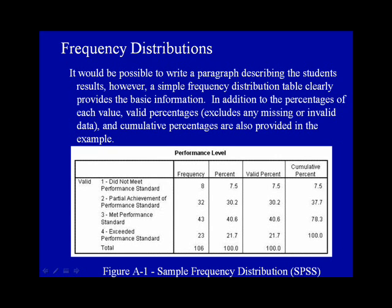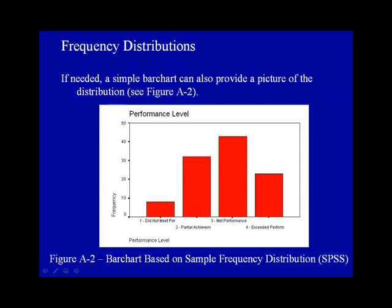It would be possible to write a paragraph describing the student's results. However, a simple frequency distribution table, as shown in figure A1, clearly provides the basic information. In addition to the percentages of each value, valid percentages, which excludes any missing or invalid data, and cumulative percentages are also provided in the example. If needed, a simple bar chart can also provide a picture of the distribution; see figure A2.